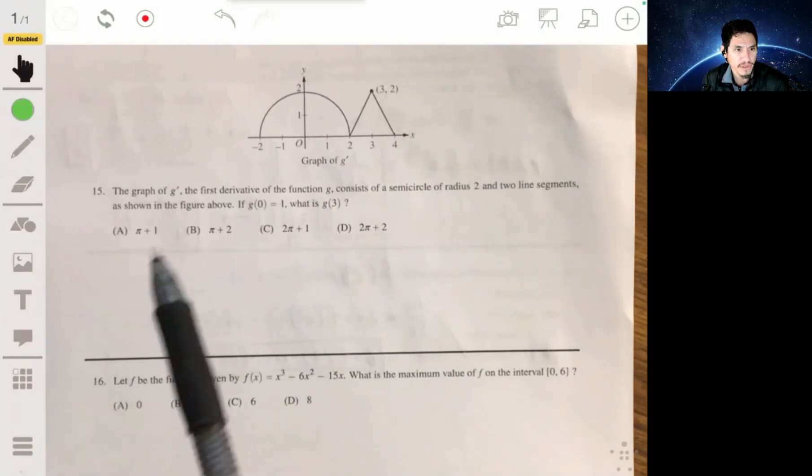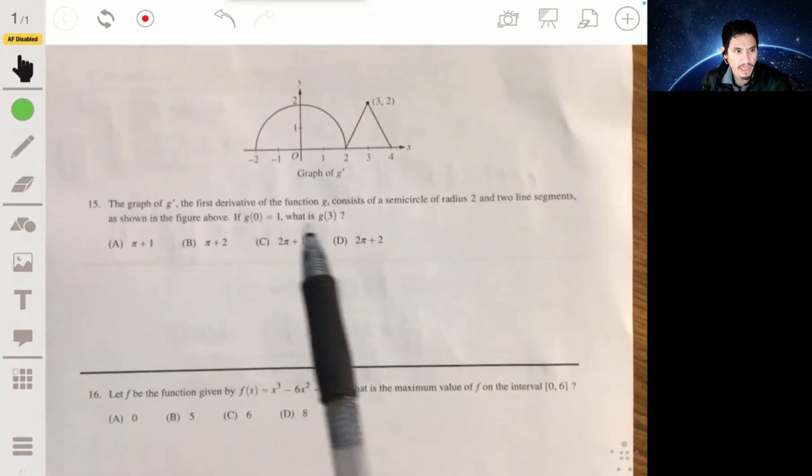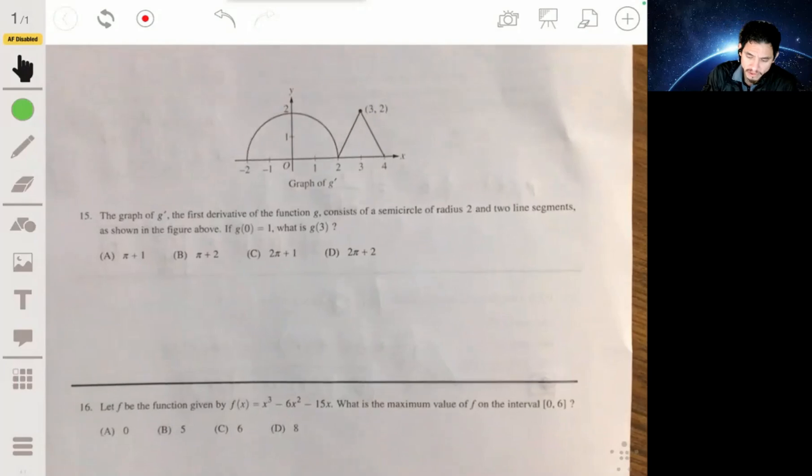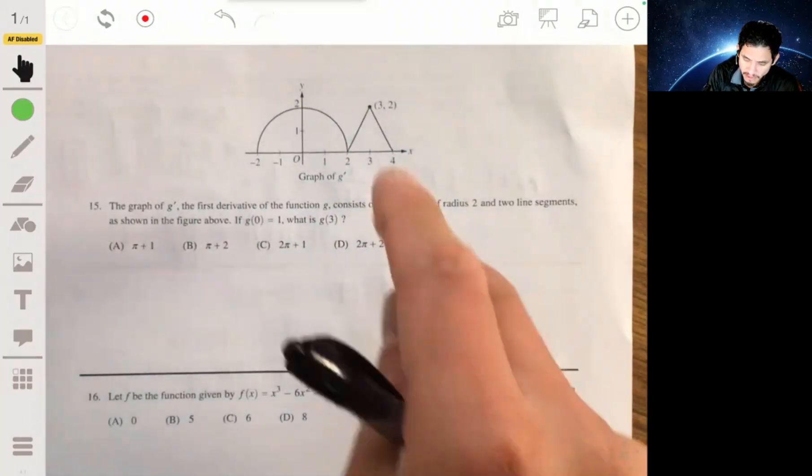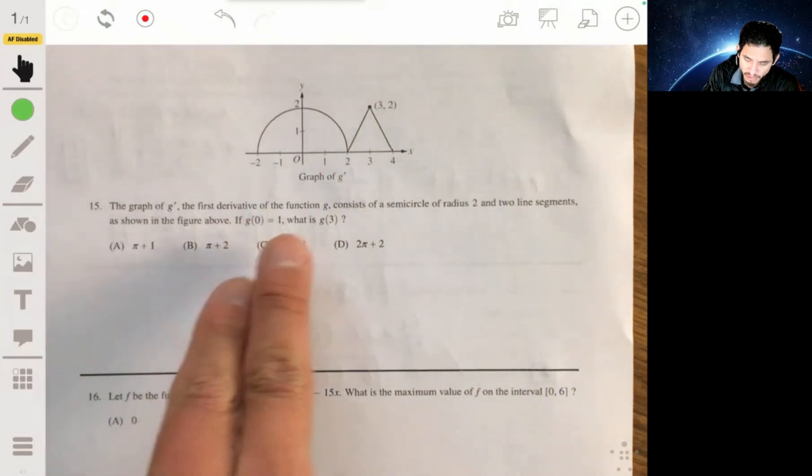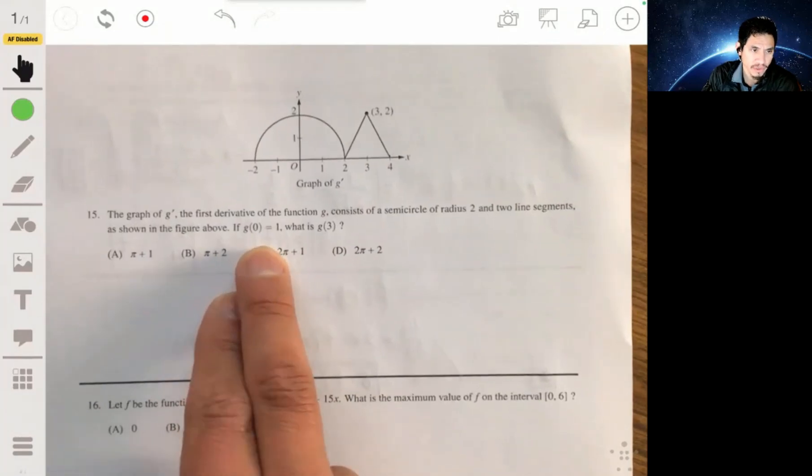Alright, in problem 15, we were given the graph of G prime, and we're told that this is a semicircle and this is a triangle, and that we want to find G of 3, and we're given that G of 0 is 1.